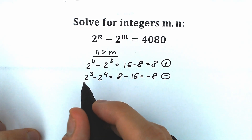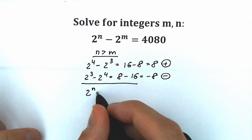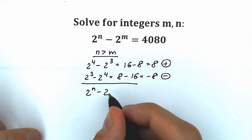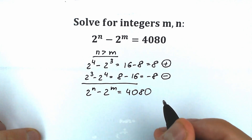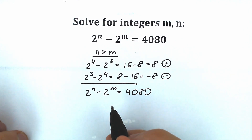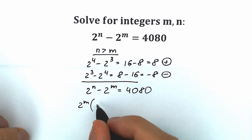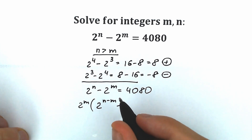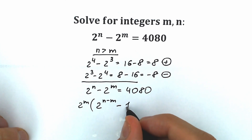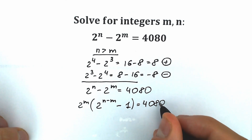Now let's rewrite our equation and solve it mathematically. We have 2 to the n minus 2 to the m equal to 4080. Now let's factor out 2 to the power m. So we have 2 to the power m times, inside parentheses, 2 to the power n minus m minus 1, equal to 4080.